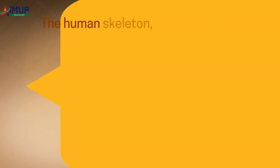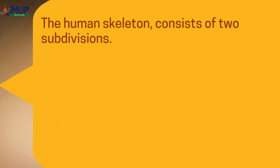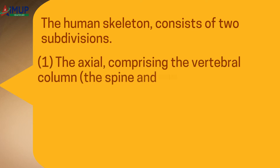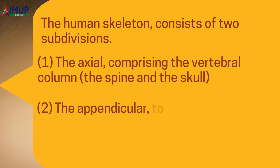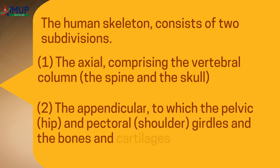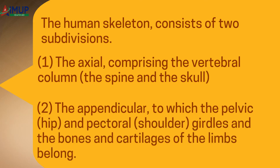The human skeleton consists of two subdivisions. One, the axial, comprising the vertebral column, the spine, and the skull. Two, the appendicular, to which the pelvic (hip) and pectoral (shoulder) girdles and the bones and cartilages of the limbs belong.